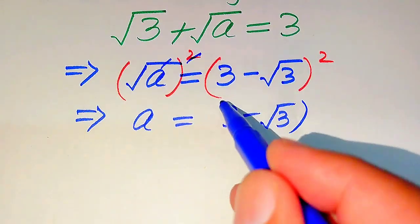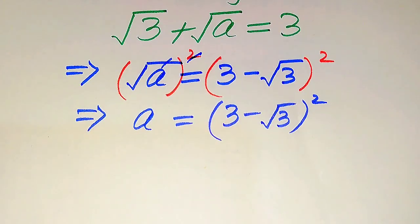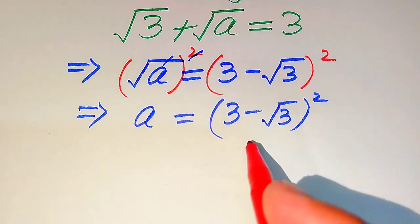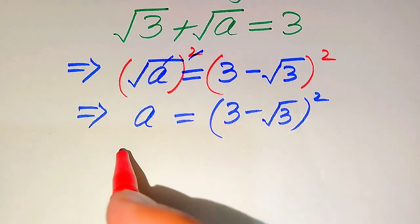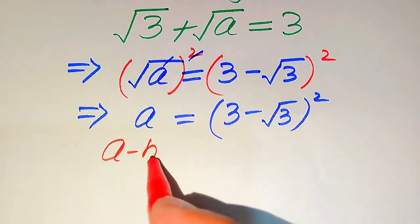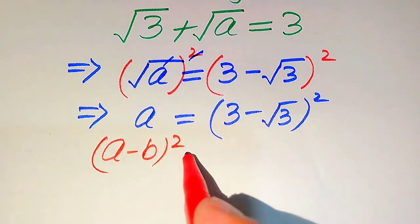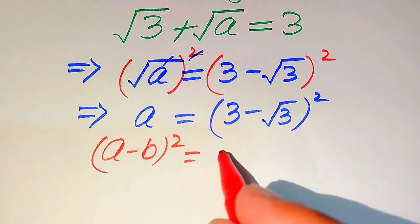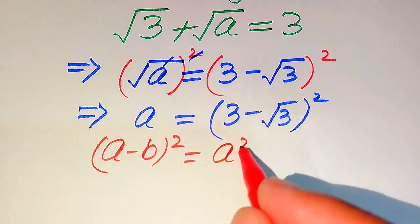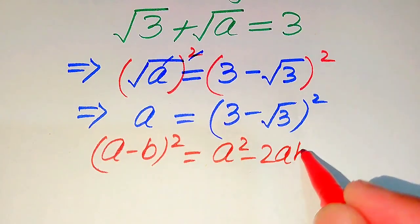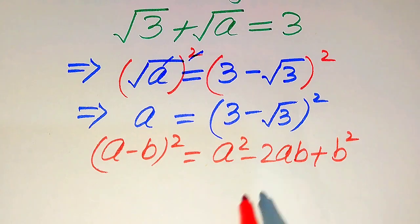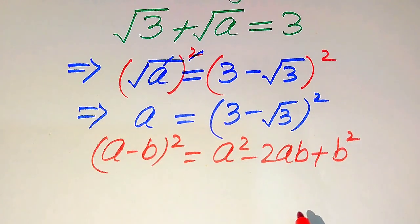We write this term as it is, and further in the next step we use a nice algebraic formula to solve the right hand side. On the right hand side we use the formula: (a minus b) squared equals a squared minus 2ab plus b squared.